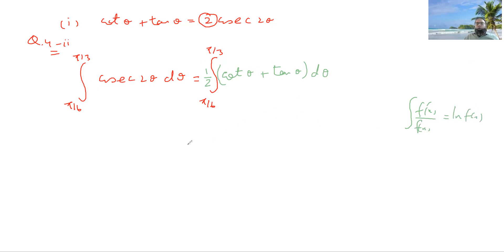So if you look at this separately, cotangent theta, can't I write it as cos theta over sine theta? Yes. So what will this be? That is ln sine. Now look at this tan theta.